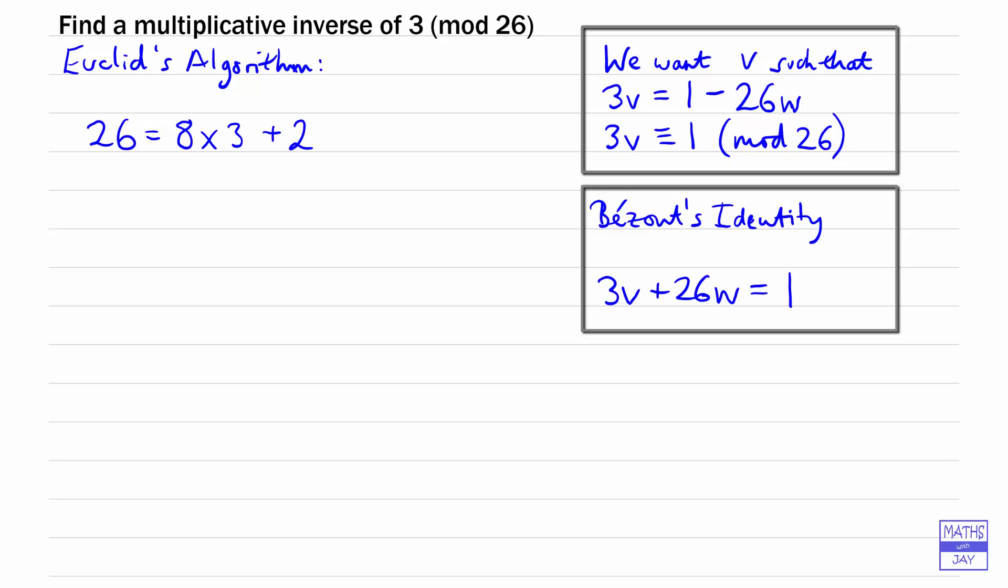We keep going through this process until we end up with the highest common factor as the remainder, which is 1. So the next thing to do is to take 3 and divide the 2 into it. So 3 is just 1 times 2, and then we get the remainder of 1.